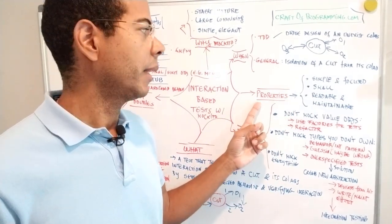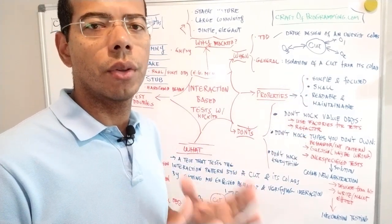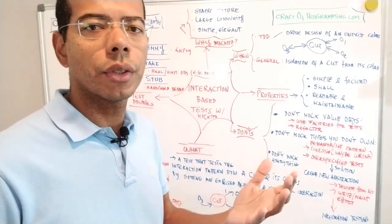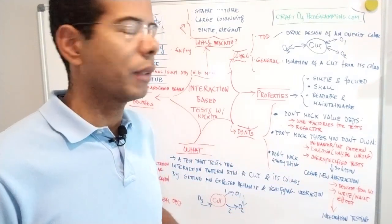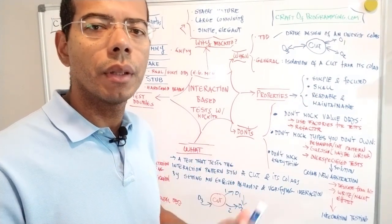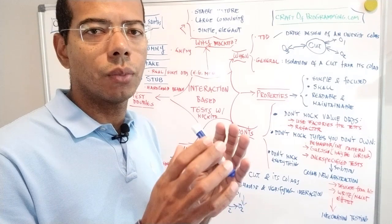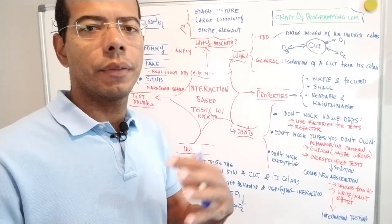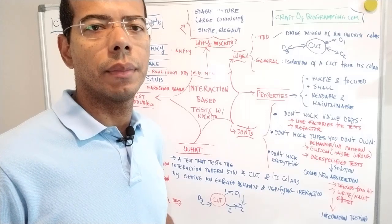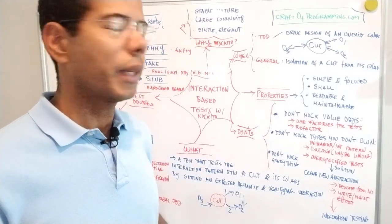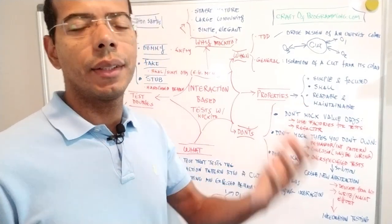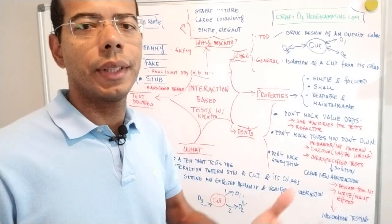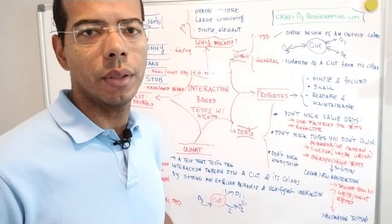Properties of good interaction-based tests: basically observe good object-oriented principles, because tests are just source code. Make sure tests are simple, focused — each test does just one simple thing — with no complicated flow logic like if/else or loops, and no control flow statements. Make them readable and maintainable, because tests last for a long time and it's important that any developer joining the team can understand, maintain, and modify them.